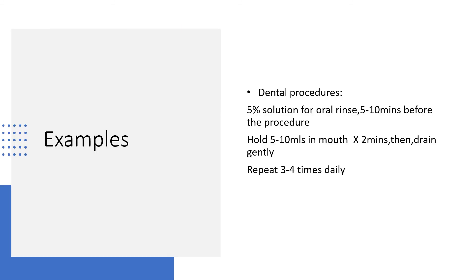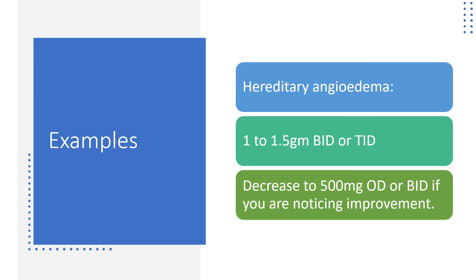Dosing examples: for dental procedures, use a 5–10% solution for oral rinse for 5–10 minutes before the procedure; the patient holds it in the mouth for 2 minutes then drains gently, and can repeat 3–4 times daily. For hereditary angioedema, give 1 to 1.5 grams two or three times daily, decreasing to 500 mg once or twice daily upon improvement.